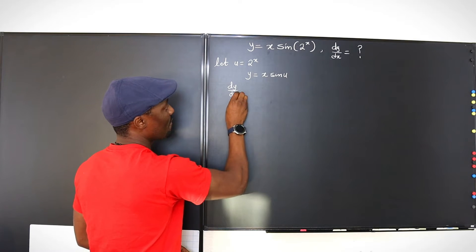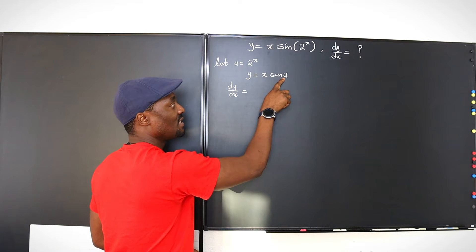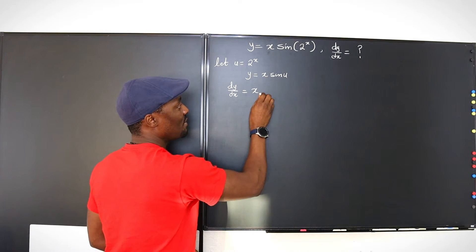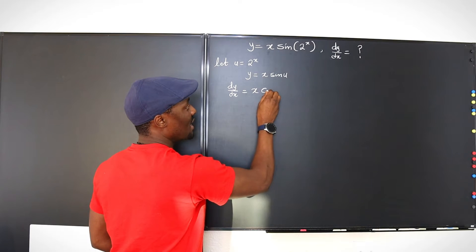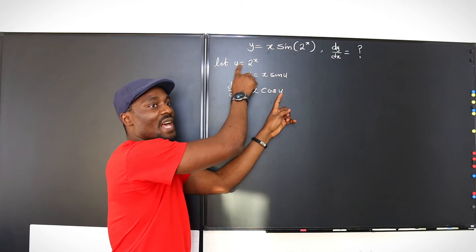we have dy dx will be equal to, remember the product rule, you keep the first, differentiate the second. So it's going to be keep the first, differentiate the second. That's going to be cosine u.